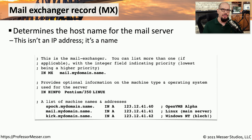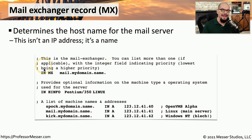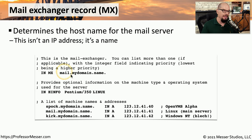Almost all domains you work with will use some type of email service. If there is email in that domain, you'll need a mail exchanger record, or MX record, in your DNS server. This record contains the name of the mail server, which you can then query further to determine its IP address. The mail exchanger record is relatively straightforward: you have an internet address specifying MX, and then the name of the mail server — in this case, mail.mydomain.name.